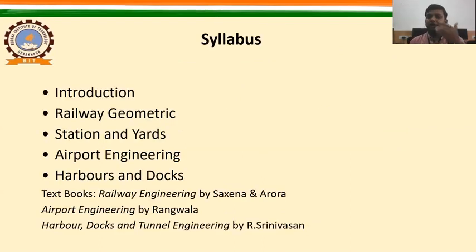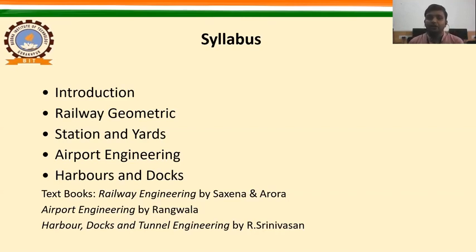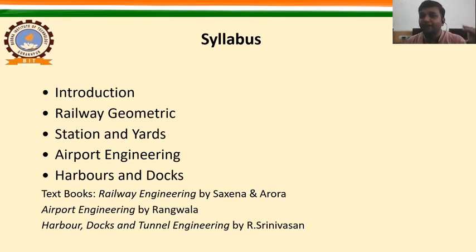The subject bearing course code RCE 076 covers the following syllabus: Module 1 is the introduction part, Module 2 is railway geometric design, Module 3 is about stations and yards, Module 4 is about airport engineering, and Module 5 is about harbour and docks engineering. In this entire video lecture series, we will focus on these five different modules, and each module will be delivered in different lectures.